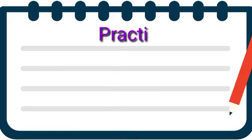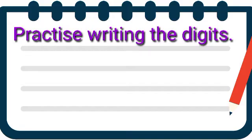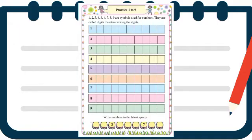Practice writing the digits — anka lihniyacha sarav kara. Aata ithe kahi worksheets dilelyaa aahet 1 to 9 paryantachya. Yaa 1 to 9 paryantachya worksheets madhe rikame blocks aahet — empty blocks aahet. Yaa blocks madhe, kiva boxes madhe, aapan te numbers lihayache aahe aani tyachi practice karaychi aahe. Let's learn and write.